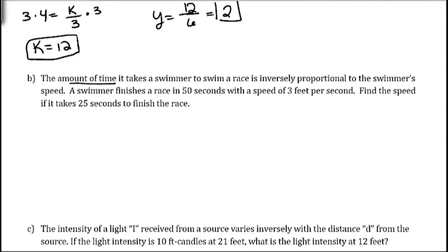So amount of time, we'll call that t. It takes a swimmer to swim a race is inversely proportional. So we're going to have t is equal to some constant k, and it's inversely proportional. So what I write next is going to be dividing into the k.